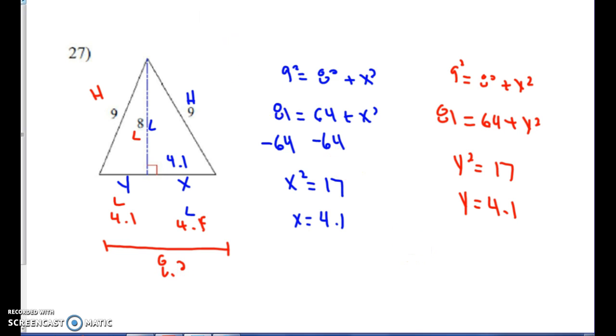So to find the area, what I'm going to do is take 1 half of 8 and multiply it by 8.2. I'm going to take 4 times 8.2. And I get it to be 32.8 units squared.